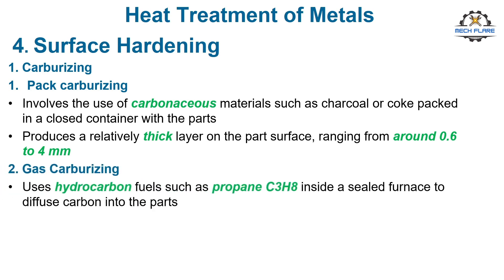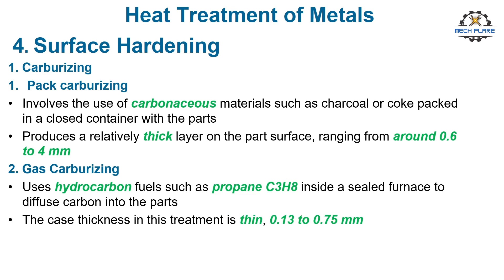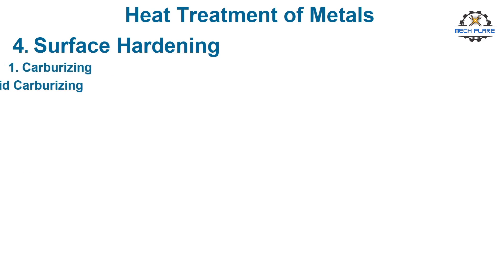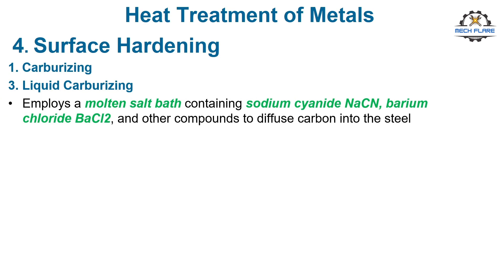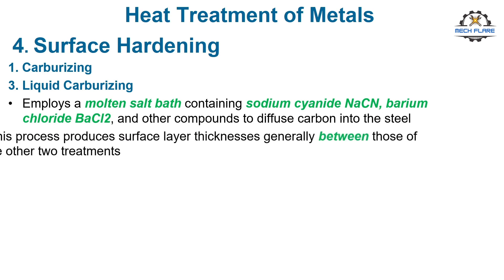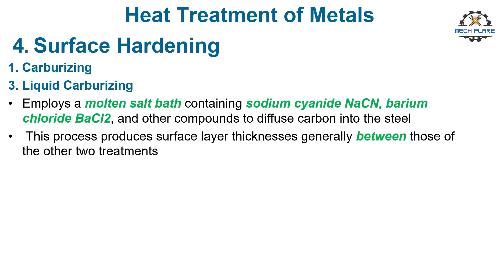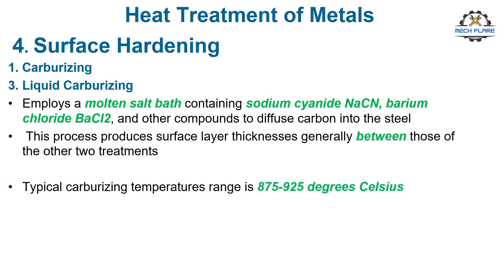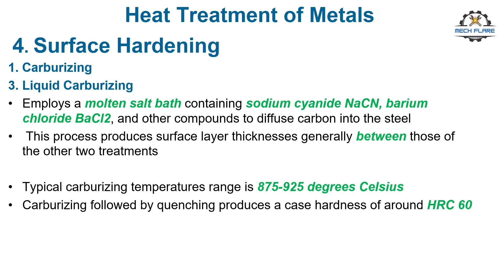Gas carburizing uses hydrocarbon fuels such as propane (C3H8) inside a sealed furnace to diffuse carbon into the parts. The case thickness in this treatment is thin, 0.13 to 0.75 mm. Liquid carburizing employs a molten salt bath containing sodium cyanide (NaCN), barium chloride (BaCl2), and other compounds to diffuse carbon into the steel. This process produces surface layer thicknesses generally between those of the other two treatments. Typical carburizing temperatures range from 875 to 925°C. Carburizing followed by quenching produces a case hardness of around HRC 60.